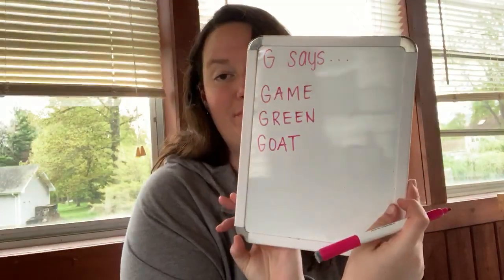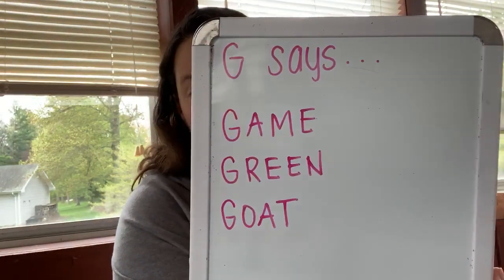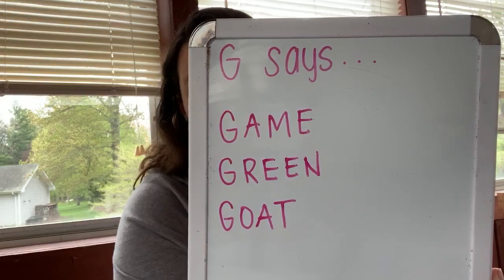And then let's think of one more word for G. So we have G, game, guh, and G, green, guh. So one more word for G — we could do an animal. And I'm thinking of the word goat. Goat is G, O, A, T. Goat. So G says guh for game, G for green, and G for goat.